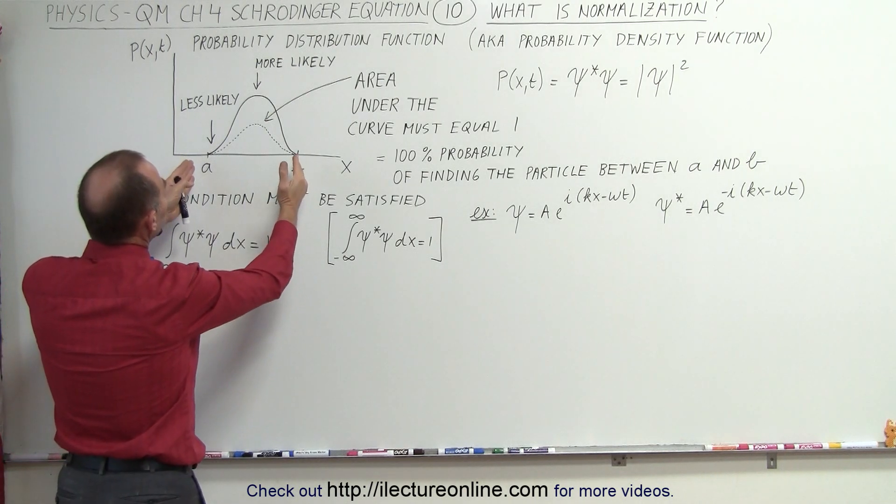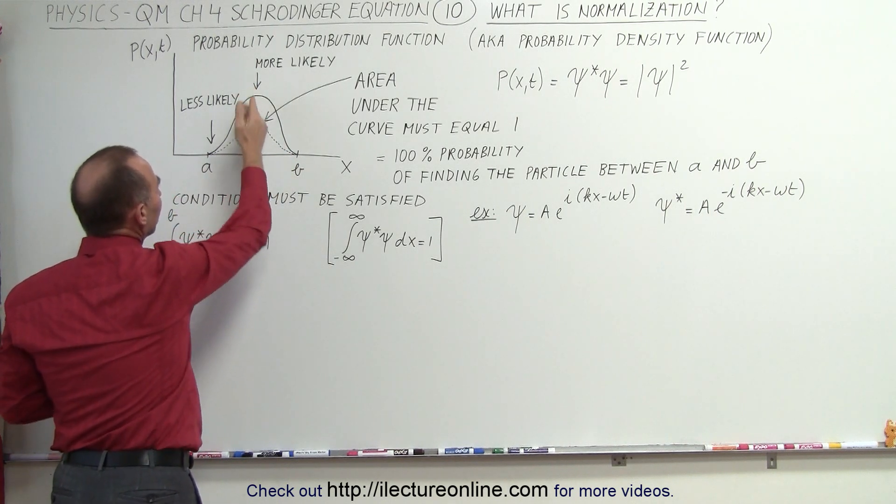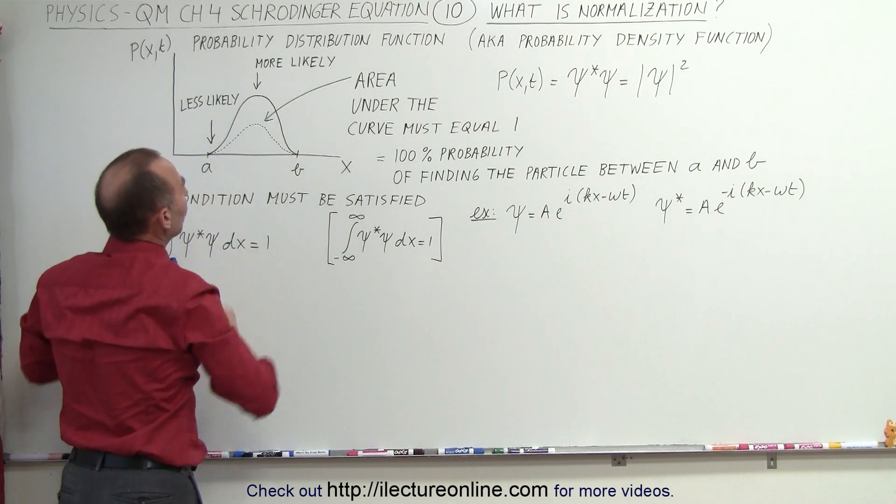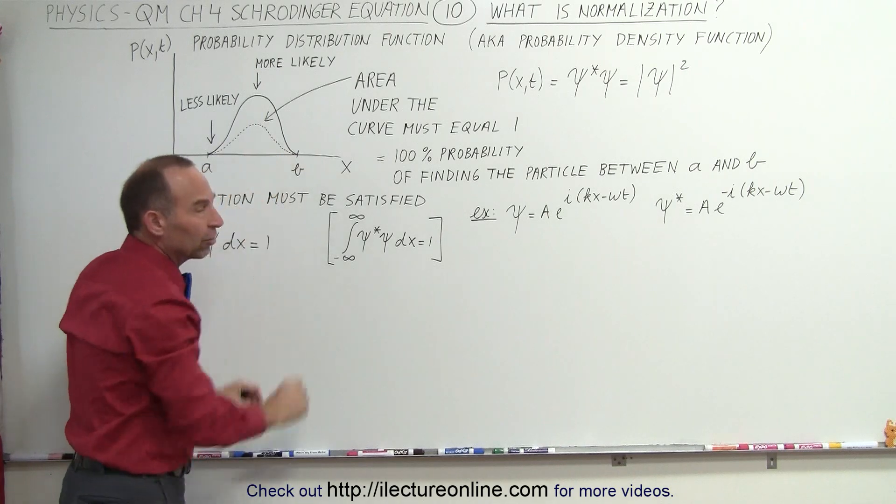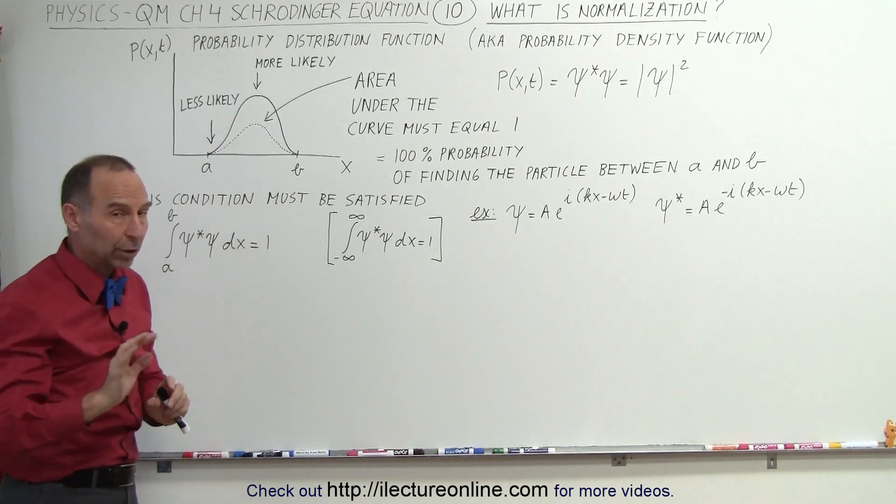Now, let's assume that the particle can only exist between a and b. Obviously, it's more likely to be found in the middle and less likely to be found close to a and b. This is just a hypothetical situation. We don't have the actual equation yet to describe that. That will come later.